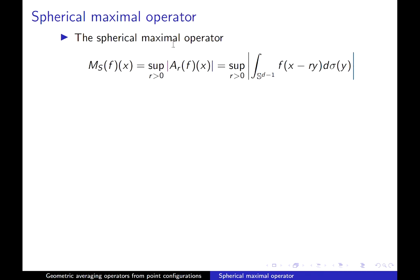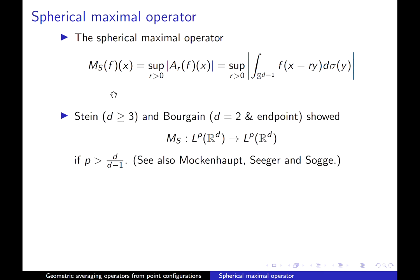One can also consider the maximal variant of this operator. What you do here is that you do not average just over a unit sphere. You look at averages over all possible spheres of all possible radii, and you take the worst one. It's not as obvious what's going to happen here, because on the one hand, averages do tend to make things better. On the other hand, you are taking the worst sphere. Monumental work by Stein in Dimension 3 and Bourgain in Dimension 2 showed that this operator maps Lp to Lp, but only if p is above a certain threshold, d over d minus 1.